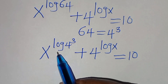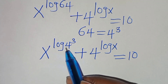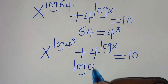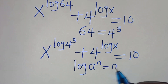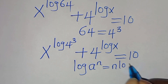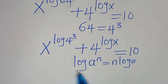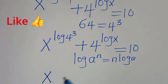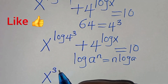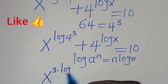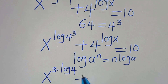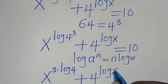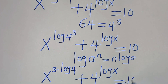Now, x to the power of log(4³) is in the form log(a^n), which can be expressed as n·log(a), applying this log power property. So we have x to the power of 3·log 4, plus 4 to the power of log x, equal to 10.